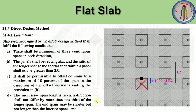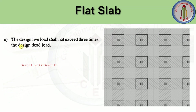The fourth condition is: successive span lengths in each direction shall not differ by more than one third of the longer span. Considering successive spans center to center of columns in both directions, the span lengths shall not differ by more than one-third of the longer span. Additionally, the end span may be shorter but not longer than the interior span.